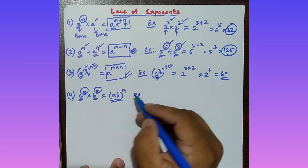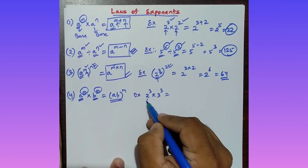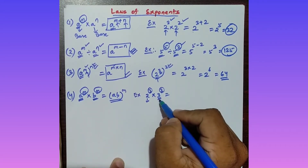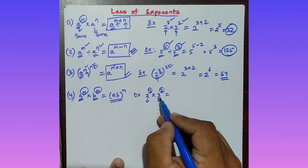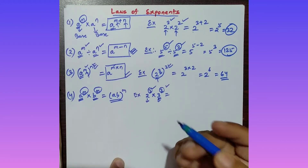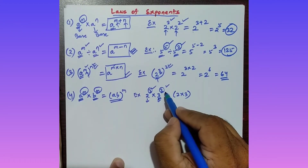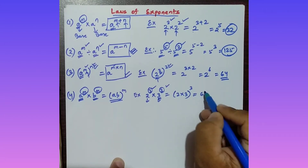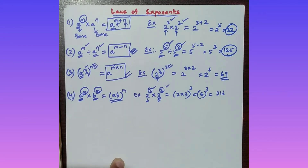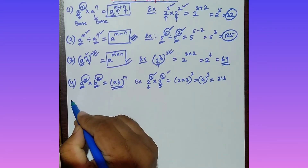Example for the fourth property: 2 to the power 3 multiplied by 3 to the power 3. Here 2 and 3 are different bases, but the power is the same (3). Apply the formula: multiply the bases — 2 times 3 is 6 — and keep the power: 6 to the power 3. And 6 cubed equals 216. That is your answer.